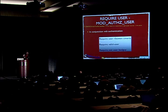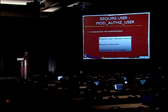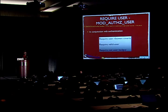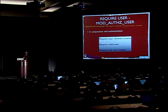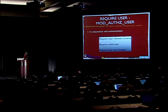The next require syntax looks very much like what you're already used to from 2.2 and before. You can require a user, require valid-user — meaning anyone that successfully logged in — and the new syntax is 'require not user,' which creates a blacklist of specific users or groups to exclude.